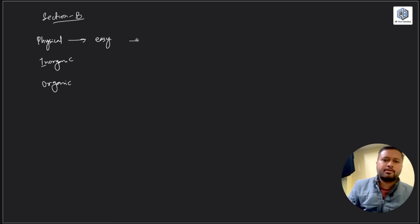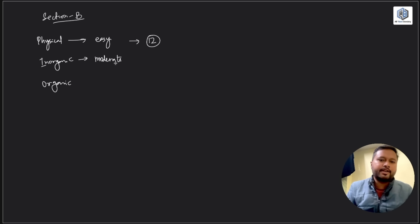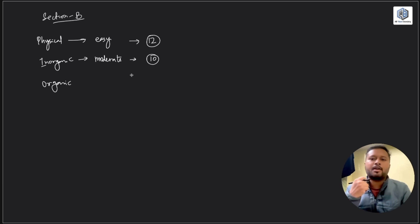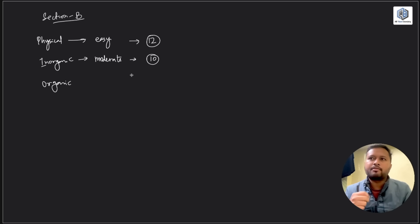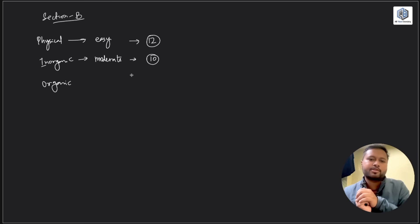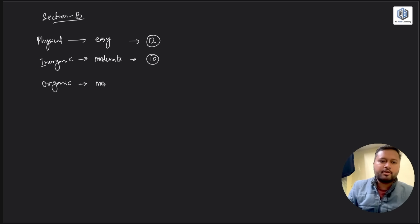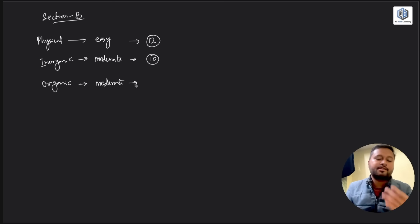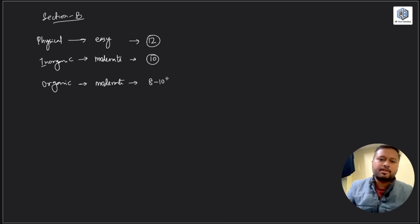There were 13 Physical Chemistry questions and someone who studied properly could do 11 to 12 easily. Inorganic Chemistry I'd say was moderate — some questions were easy, some a little tricky. Out of 13 Inorganic Chemistry questions, someone could do around 10. Most questions were from organometallic compounds and coordination chemistry, with one or two from bio-inorganic chemistry that were quite direct.